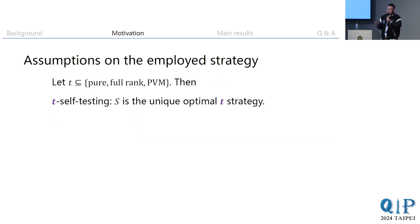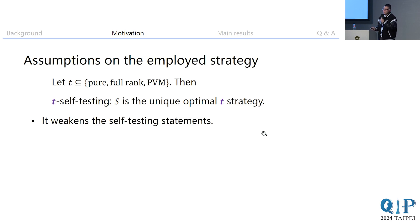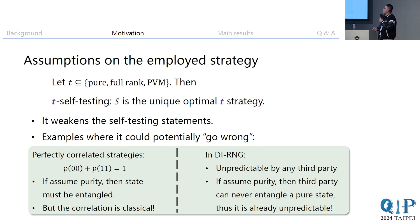To formalize this idea, let T be the subset of all possible assumptions that could be made about the employed strategy. We call it a T-self-test if those assumptions in T have been made for the uniqueness of the strategy. Clearly, making assumptions means we are looking at only a proper subset of all strategies, which weakens the self-testing statement from a purely mathematical point of view.